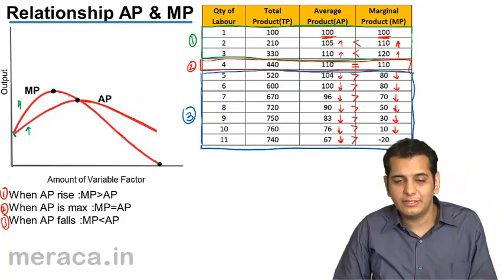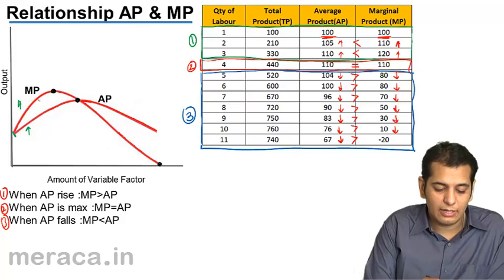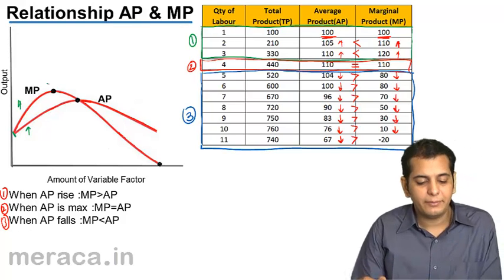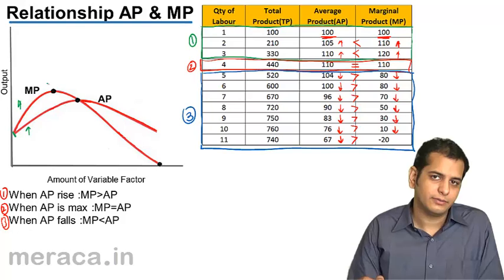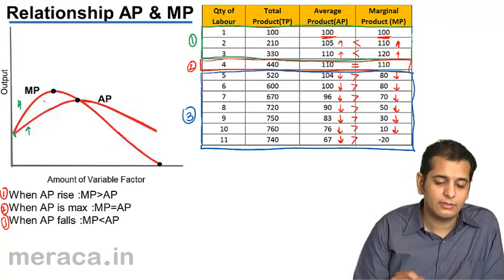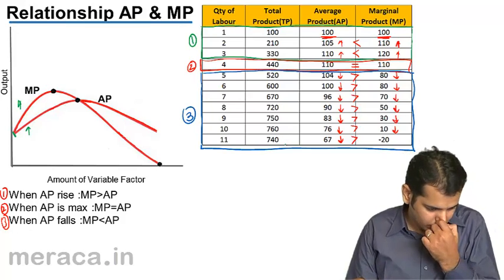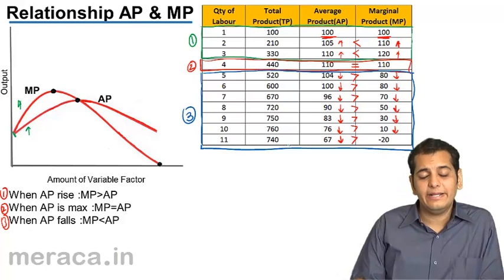So our first condition is, when both are rising, MP is greater than AP, which can be seen in the graph. Our next condition is,